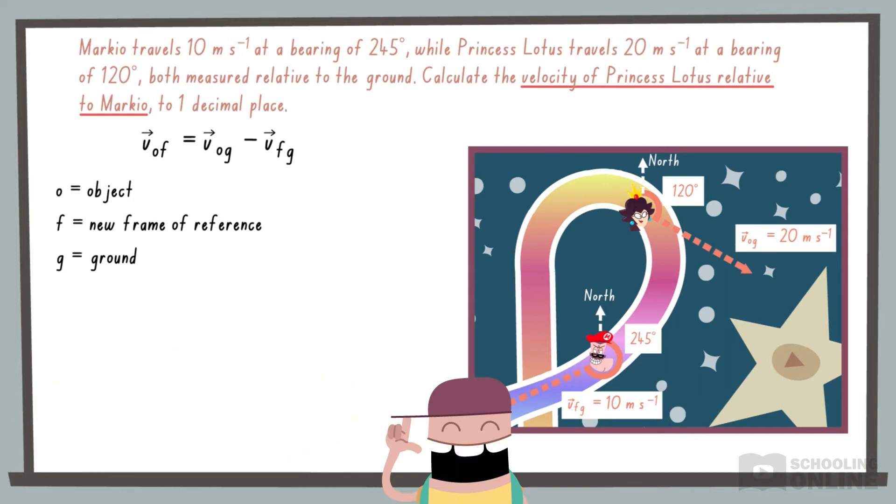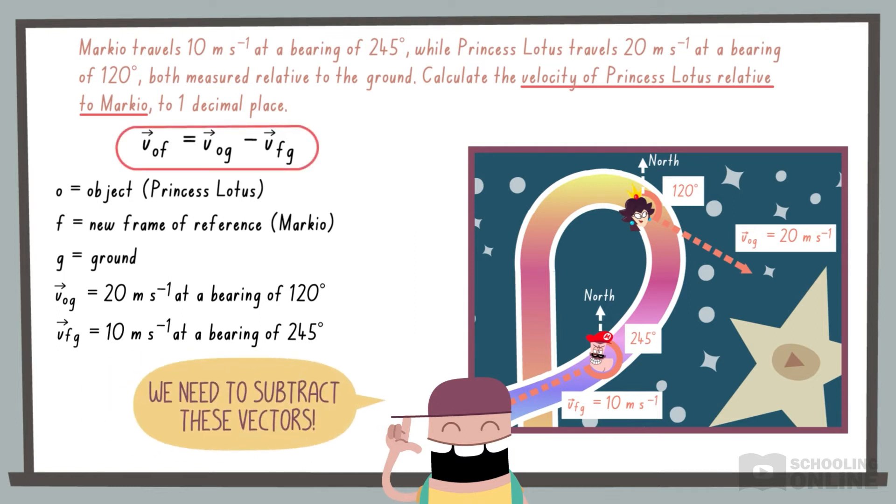Here, the letter O represents Princess Lotus, whereas the letter F represents the new frame of reference, Markio. The question tells us the values for VOG and VFG. To find VOF, we need to subtract these vectors.